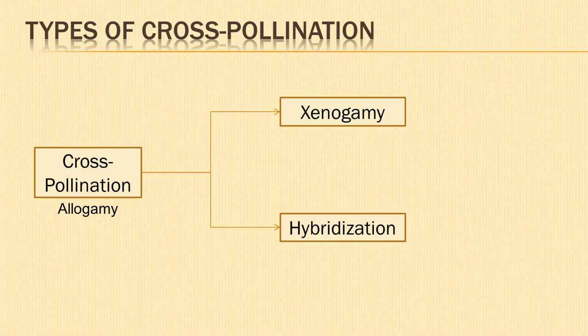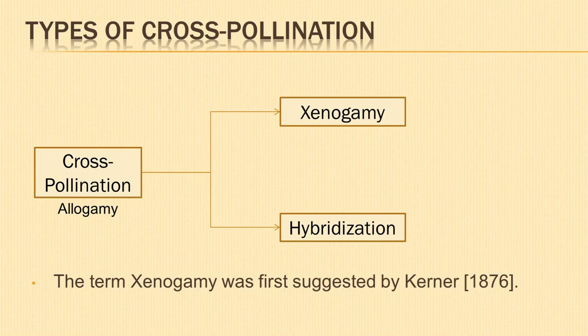There are two types of cross-pollination: xenogamy and hybridization. Xenogamy is the transfer of pollen grains from the anther of a flower to the stigma of another flower of a different plant, bringing genetically different types of pollen grains to the stigma. The term xenogamy was first suggested by Kerner in 1876, and it is found in Papaya. Hybridization is the transfer of pollen grains from the anther of a flower to the stigma of another flower of a different species, e.g. pollination between two species of cotton.